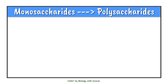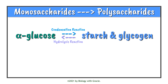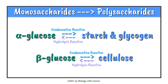For the polysaccharides: alpha glucose joins with other alpha glucose molecules via condensation reactions to produce starch or glycogen, and starch and glycogen can undergo hydrolysis reactions to get back to alpha glucose molecules. Beta glucose combines with other beta glucose monosaccharides via condensation reactions to produce cellulose, and cellulose can be reverted back to beta glucose monosaccharides via hydrolysis reactions.